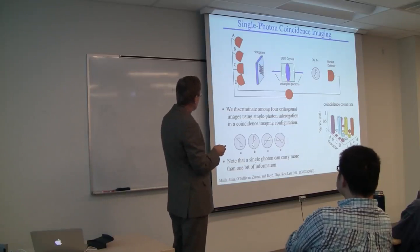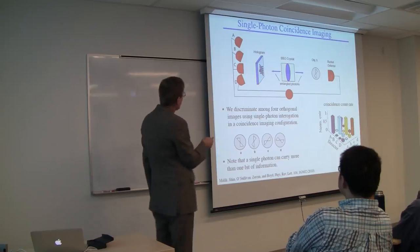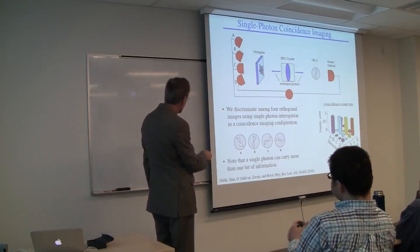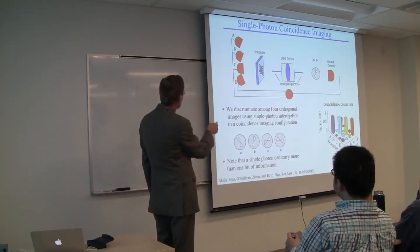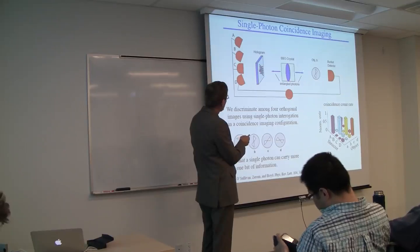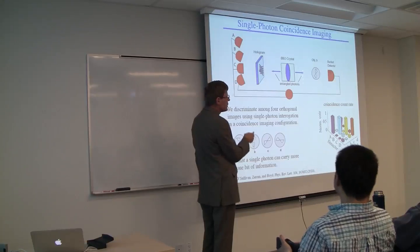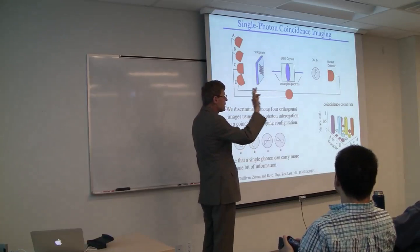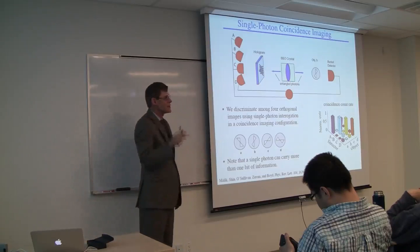I generate two photons that are entangled in position and transverse momentum. I have a multiplexed hologram, so if this beam has this cross section, the photon hits detector A. If this beam has this cross section, it hits detector B, and the same for C and D. If the photon passes through this object, this detector will go click. The two photons are entangled, so this photon has to take on that same transverse distribution.